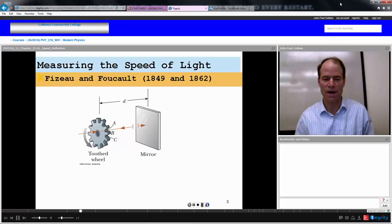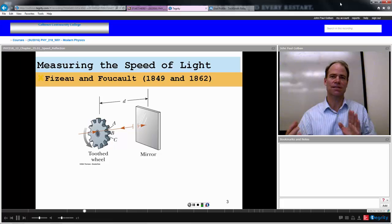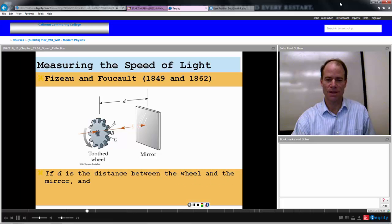Well, if you know the spacing of the teeth of this wheel, and you know how fast you're turning the wheel, you can calculate the time it takes for it to travel that little bit of angle between a gap and the next tooth on the wheel. So you can calculate the time it took for the light to go there and back again, and if you take that distance there and back again divided by that time, you can get a pretty good value for the speed of light.